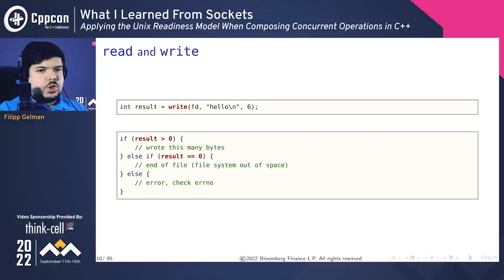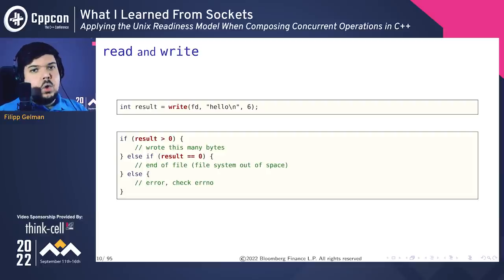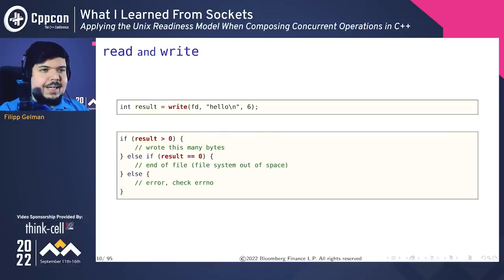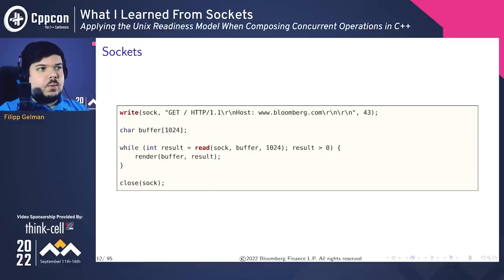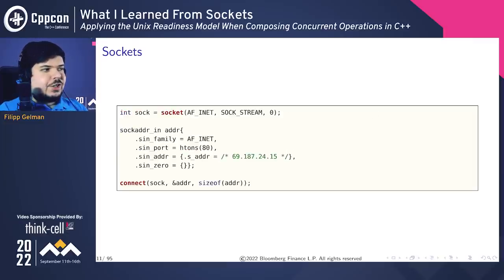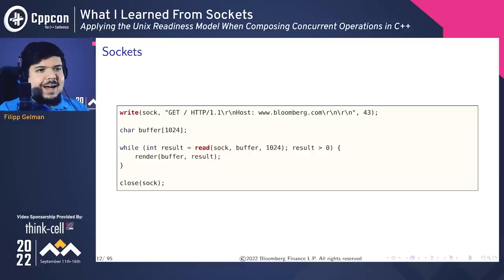Write follows a similar protocol — it also returns an integer. If greater than zero, that's how many bytes we wrote. If equal to zero, that's end of file or the device being written to is out of space. Otherwise, it's an error. Sockets build on this protocol. The initial stuff is different — we have to create a socket, connect it to some address (here bloomberg.com). But after we've done this, we get to pretend a socket is just a file. We write the HTTP request to the socket, then read out the response. In two slides, I can establish a connection and fetch a web page — omitting some error checking, but not much. So this is kind of an achievement.